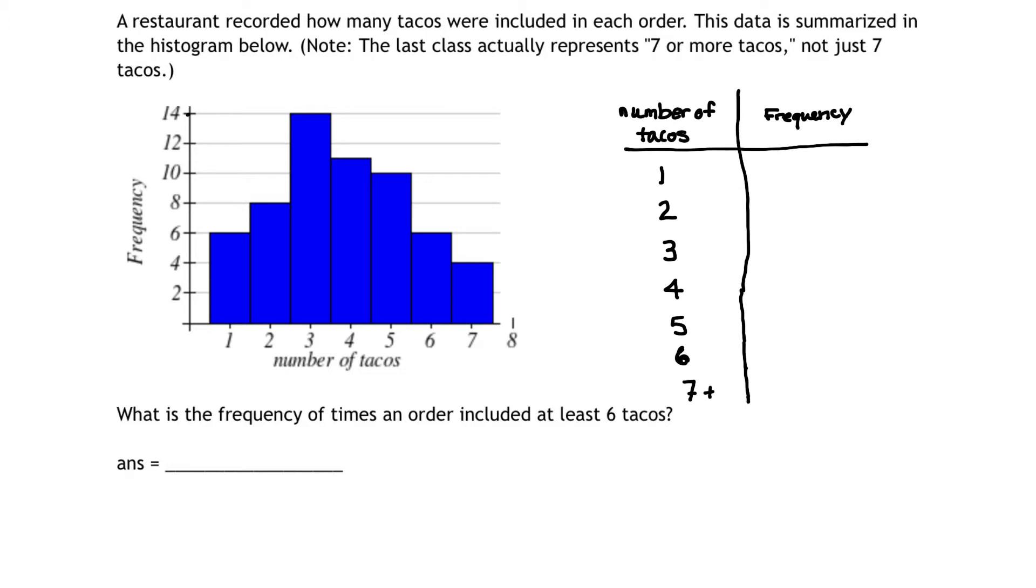The frequency table we can create that corresponds to this frequency distribution would have first the classes, which is the number of tacos. The number of tacos per order could be one taco per order, two, three, four, five, six, or seven plus. And those correspond to the horizontal numbers on our frequency distribution.